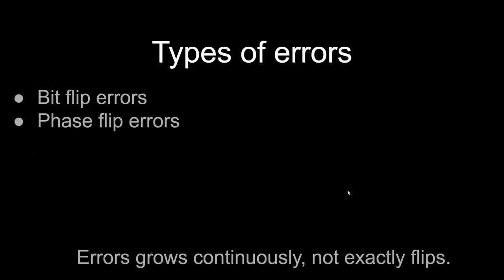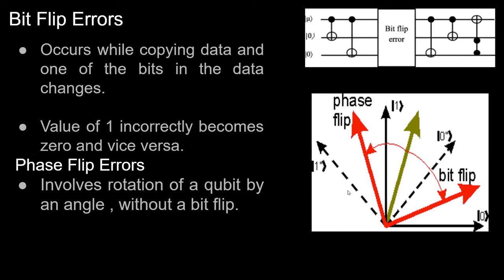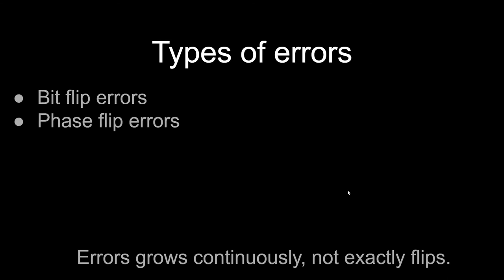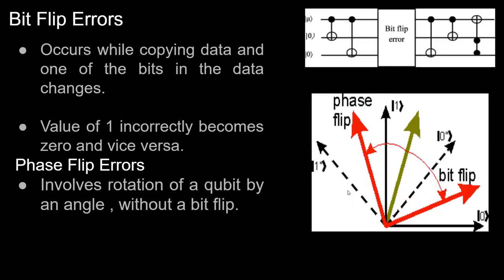There are two types of errors a quantum circuit can face: bit flip errors and phase flip errors. Bit flip error occurs when an input bit of one becomes zero, or vice versa. Phase flip error occurs when a qubit undergoes a rotation in phase — a minus qubit turns to a positive qubit. Bit flip errors occur while copying data; phase flip errors involve rotation of a qubit by an angle without a value flip.